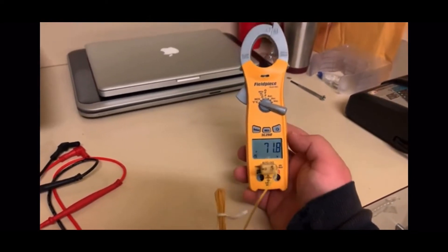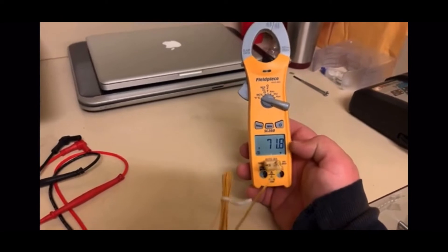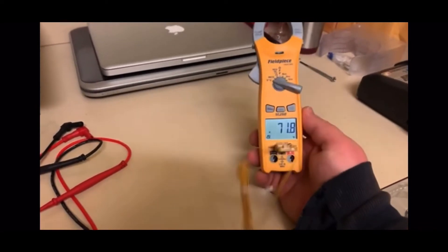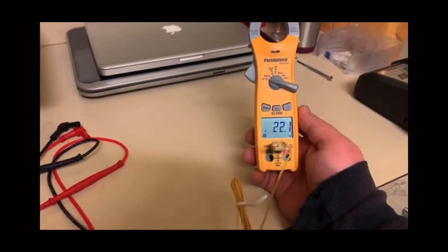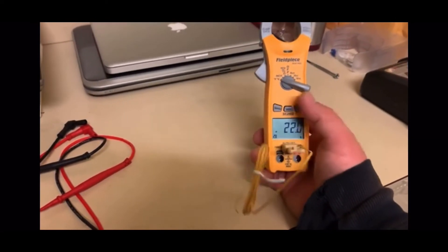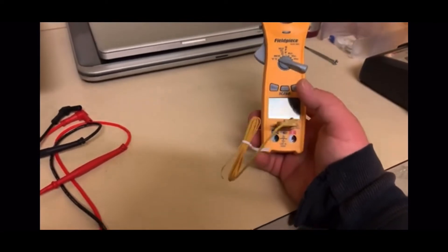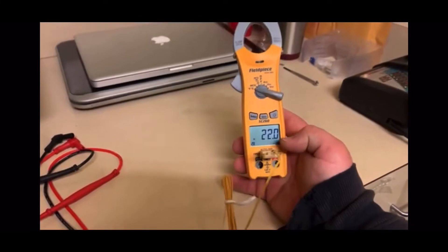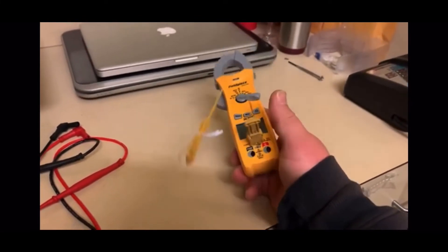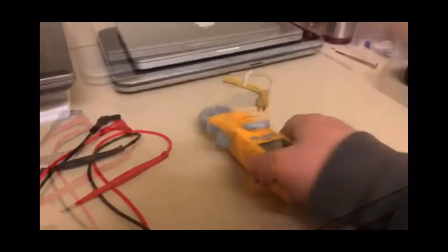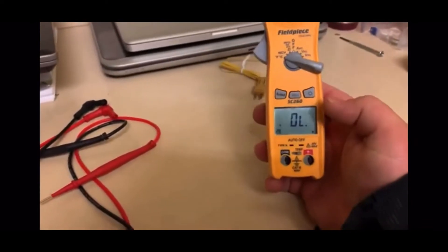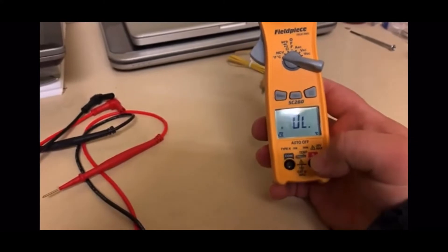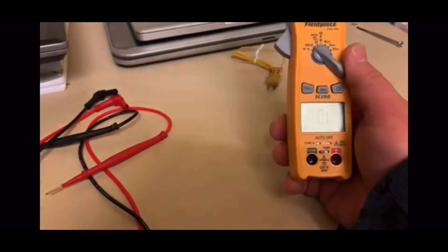For those who use Celsius, you just press select and it will change to Celsius. Now it's 22 Celsius, the equivalent of 72 degrees. You put this end of the wire on the pipe and check the temperature to take your subcooling or superheat, depending on what system you're working on.